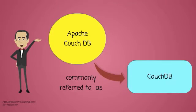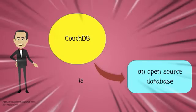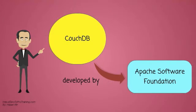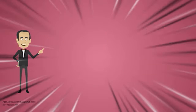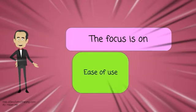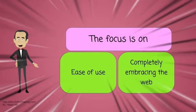Apache CouchDB, commonly referred to as CouchDB, is an open source database developed by Apache Software Foundation. The focus is on ease of use and completely embracing the web.